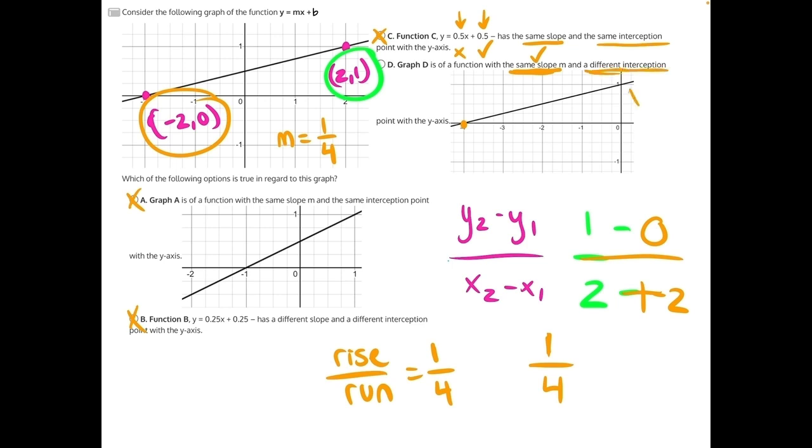Here, the interception point is at y equals positive 1, and here it is at y equals 0.5. So it is a different interception point, same slope, making d our correct answer.